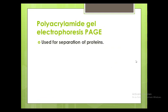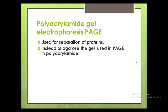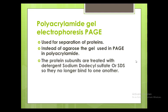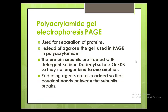What is PAGE, or polyacrylamide gel electrophoresis? It is used for the separation of proteins. Instead of agarose, the gel used in PAGE is a polyacrylamide cross-linked molecule. Protein subunits are treated with the detergent SDS — sodium dodecyl sulfate — so they no longer bind to one another. If we do not apply the detergent, the bonds between proteins do not break and we cannot sort or separate proteins on the basis of size. The detergent breaks the bonds between protein subunits. Reducing agents are also added so that covalent bonds between subunits break.